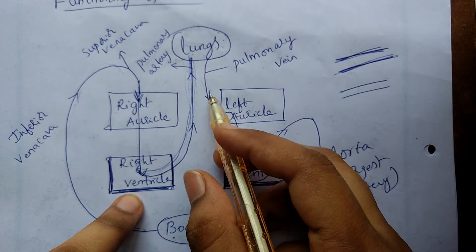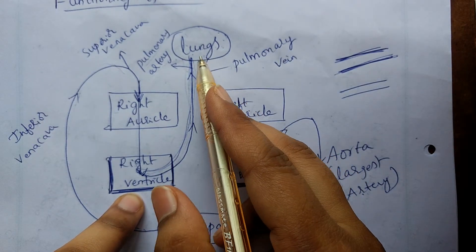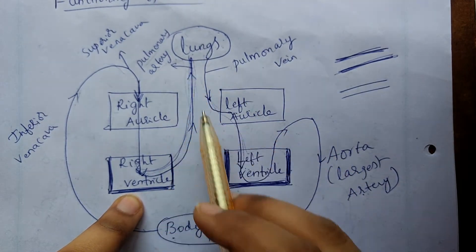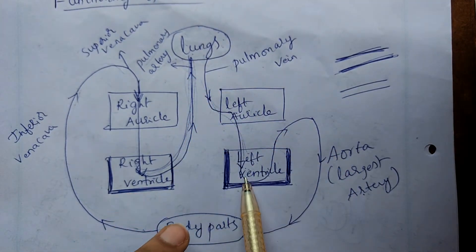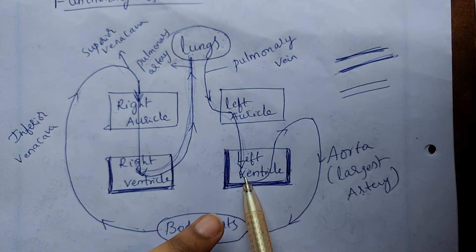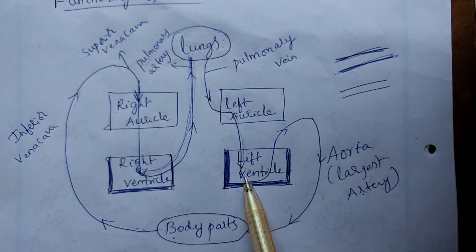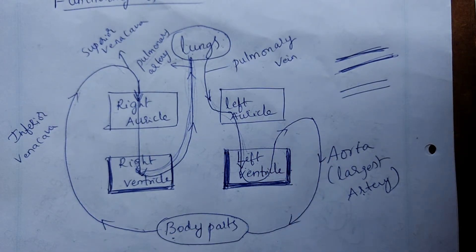The right ventricle carries impure blood via the pulmonary artery. The left ventricle carries pure blood. Arteries are thick-walled.